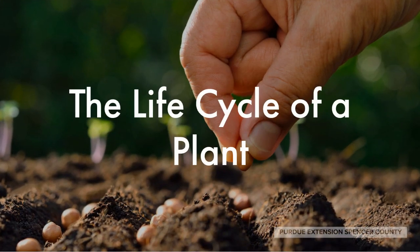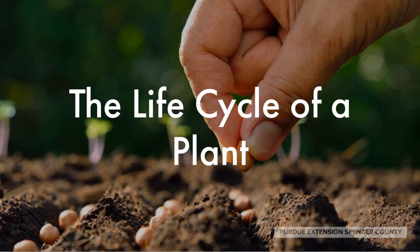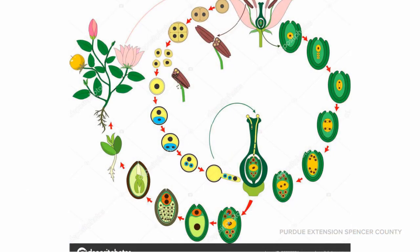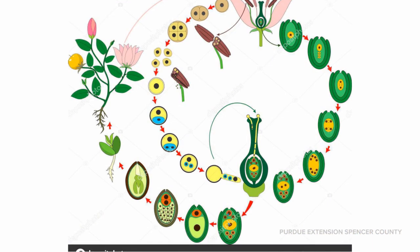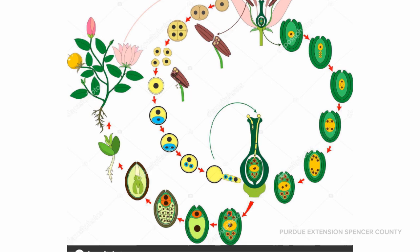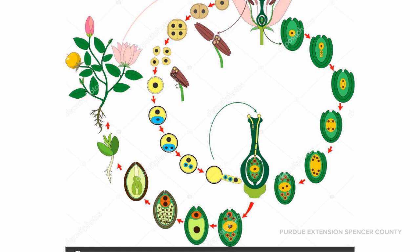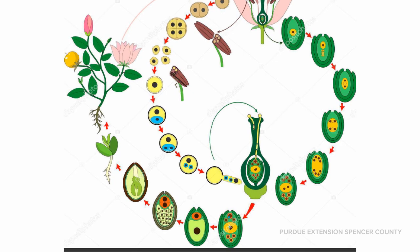We are going to start with the life cycle of a plant and use an orange as an example. As we can see in this picture, plants go through many changes throughout their life cycle. Typically, plants go through five main phases in their life cycle: seed, germination, sprout, flowering, and then end with full maturity.